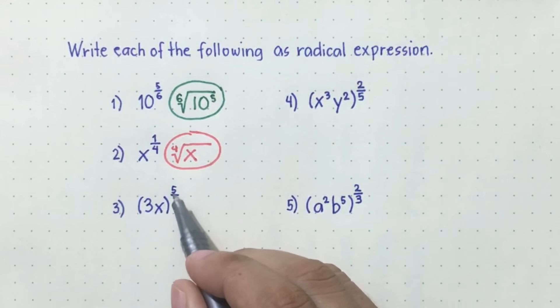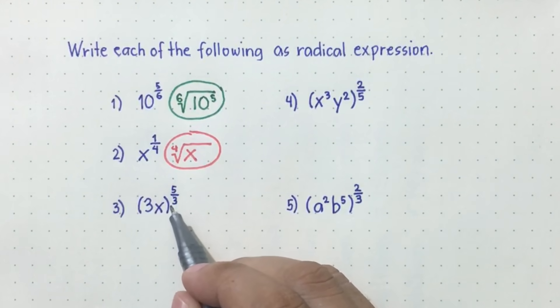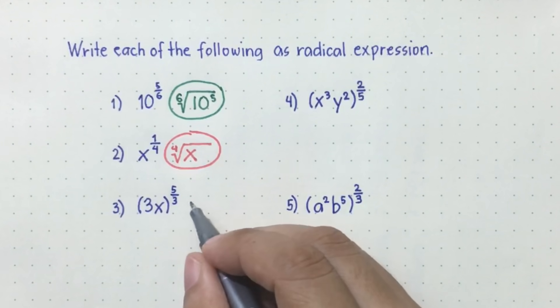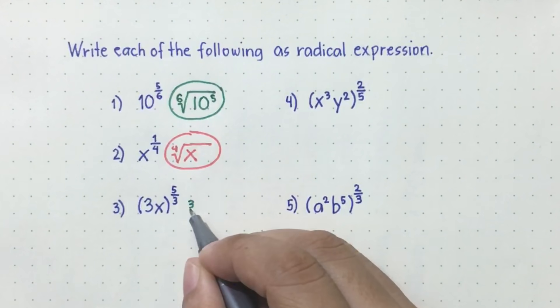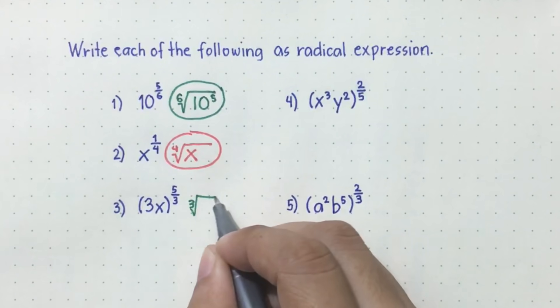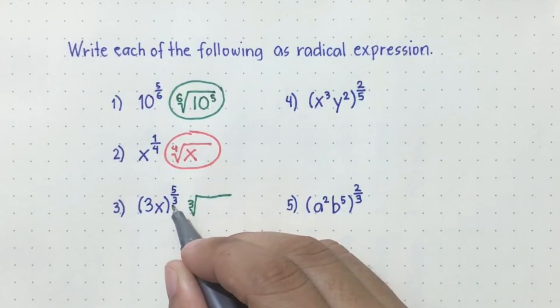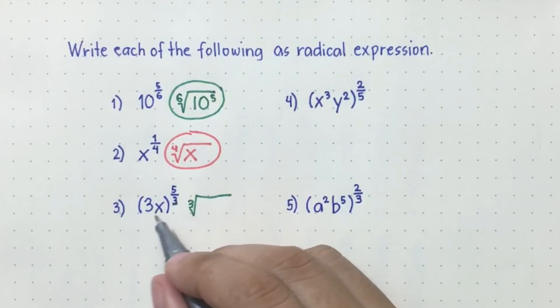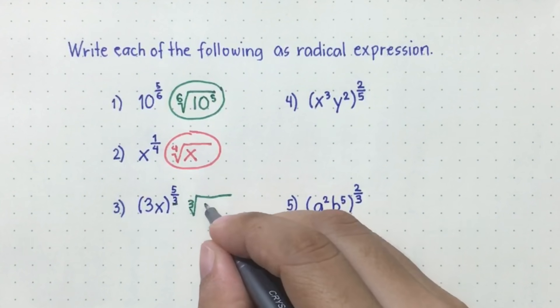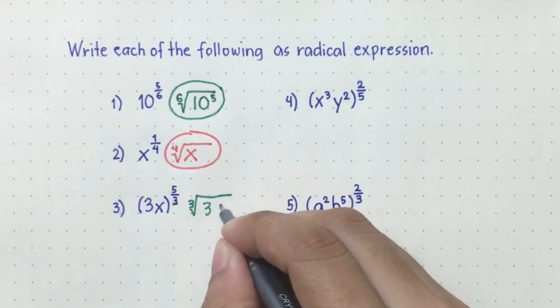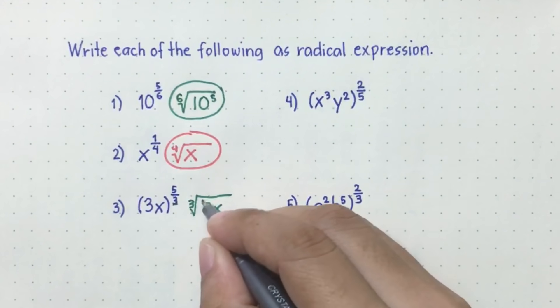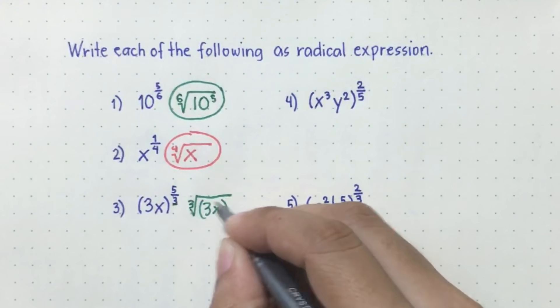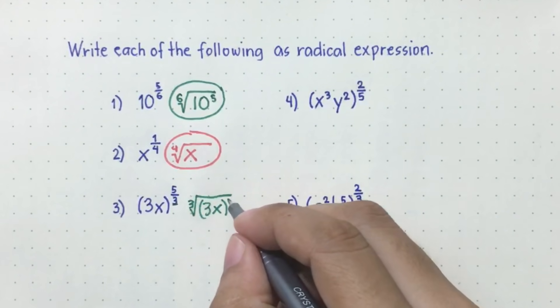Next, (3x) raised to five over three. So three will be the index, the denominator, and then the radicand 3x will be raised to the numerator, which is five.